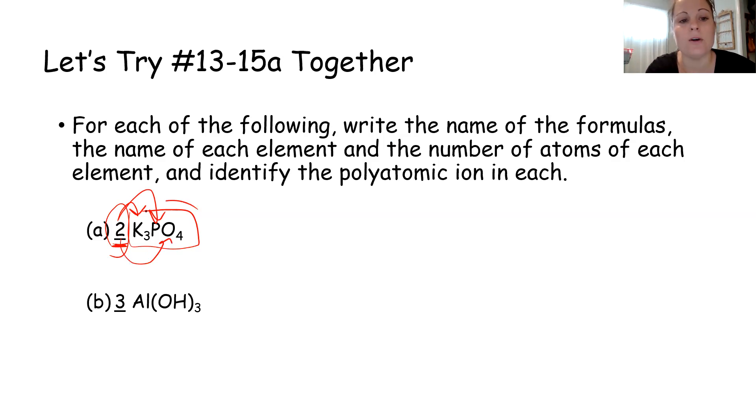And lastly, number 15 wants to know the name of the polyatomic ion. And according to table E, PO4 is the polyatomic ion phosphate. In letter B, number 13, there is one aluminum atom, and then there are three of everything inside the parentheses. So there are three oxygen atoms, and there are three hydrogen atoms. In number 14, when you add the coefficient of three in front, there's three of everything after the coefficient. So there are three aluminum atoms, but there are nine oxygen atoms, and there are nine hydrogen atoms. OH, according to table E, is the polyatomic ion hydroxide.